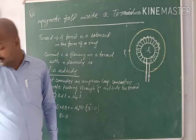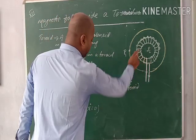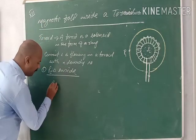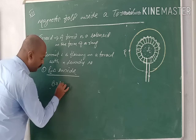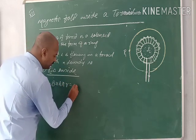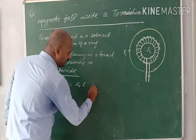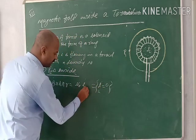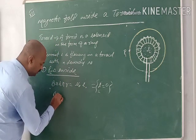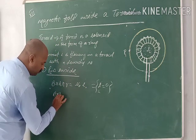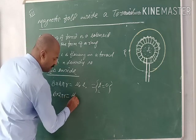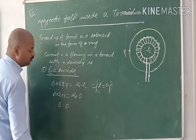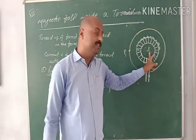Next, what is the magnetic field inside the toroid? We take B × 2πR = μ₀I, but once again inside the toroid the enclosed current I = 0. So B × 2πR = μ₀ × 0, which gives B = 0. Inside the toroid, the magnetic field is also zero.